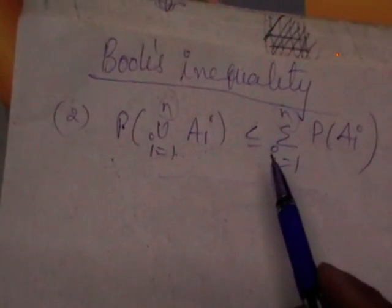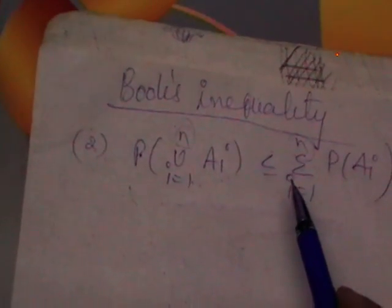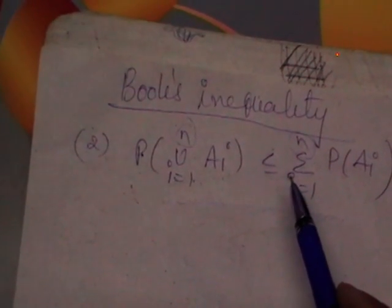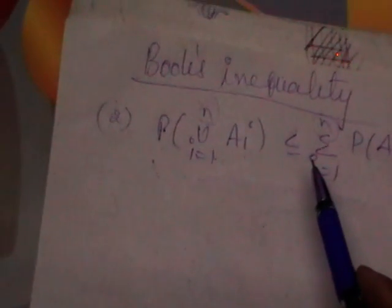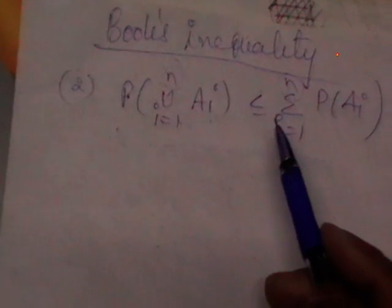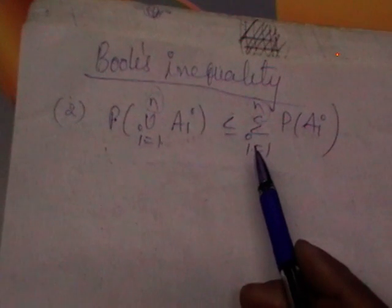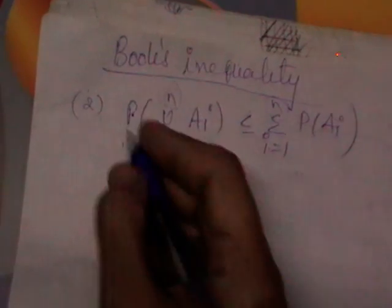Again it involves n number of events. This proof is also done by mathematical induction, which consists of considering the given statement as equation number 1. In the first step you prove it is true at n equals 2. Then you assume it is true at n equals r, and then prove it is true at n equals r plus 1. By mathematical induction we say the given statement is true — the same approach used for the addition theorem and the first part of Boole's inequality. Consider this as equation number 1.